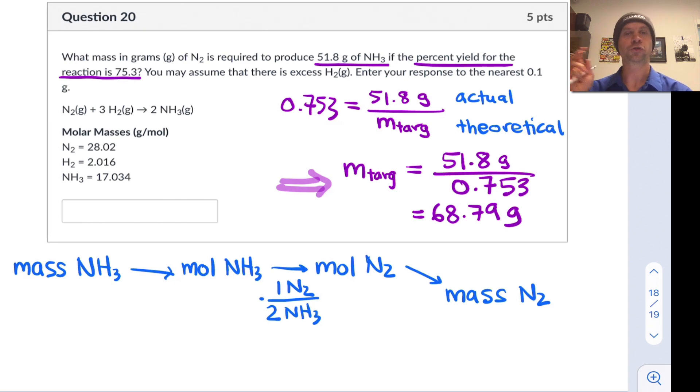And then finally, we're going to multiply by a molar mass to go from the moles of N2 to the mass of N2. So now that we've sort of charted our path through stoichiometry space, let's plug in the numbers.